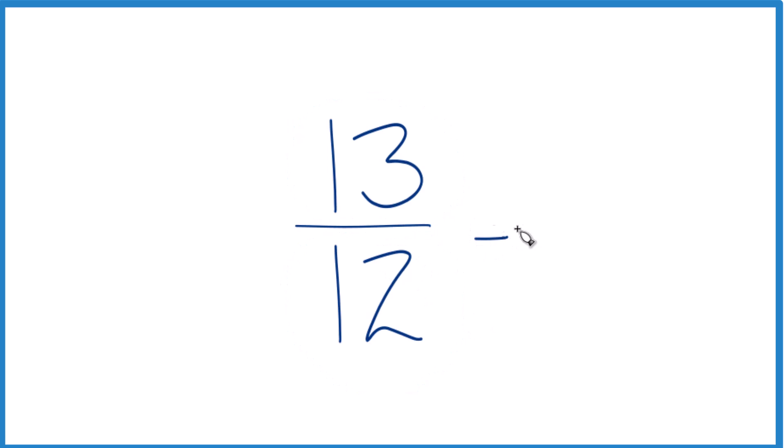So to do that, we see how many times 12 goes into 13. So 12 goes into 13 just once with 1 left over. So the remainder, that becomes the numerator.